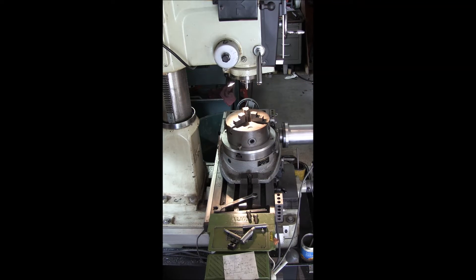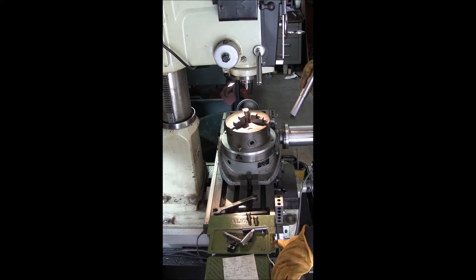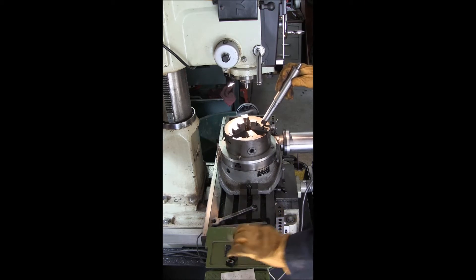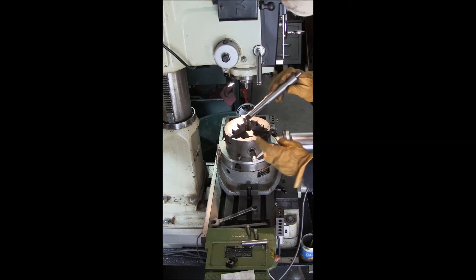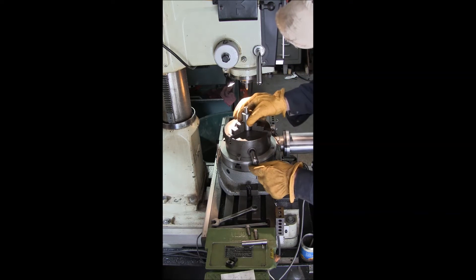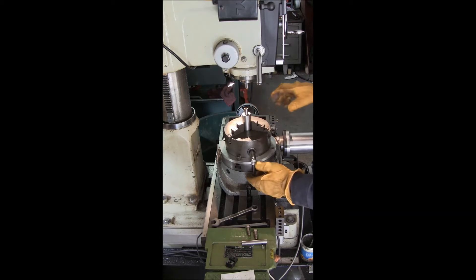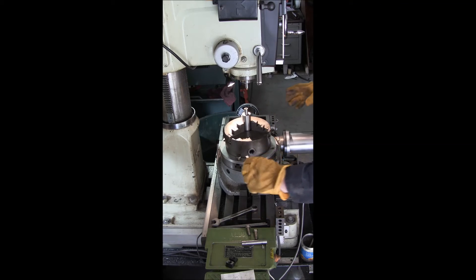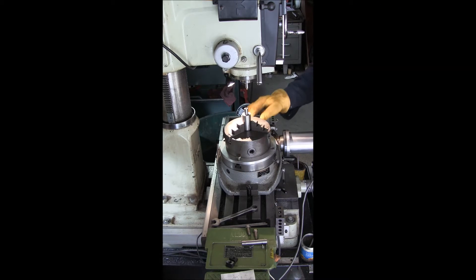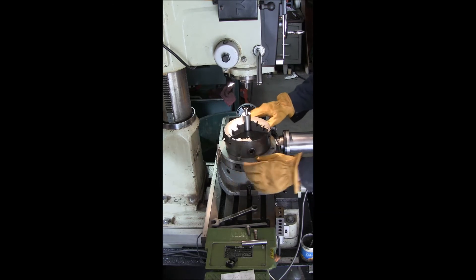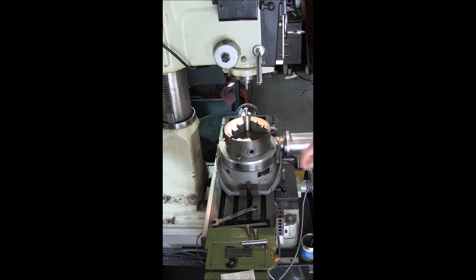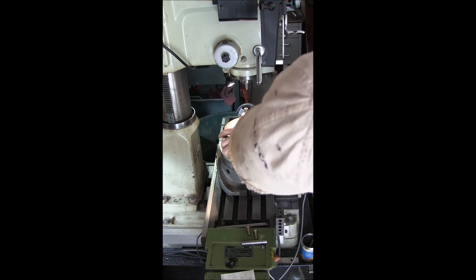What you do is take this arbor, stick it down into the taper hole, and then just loosely snug up the chuck on the arbor. That centers everything up, then you can tighten up the T-bolts.